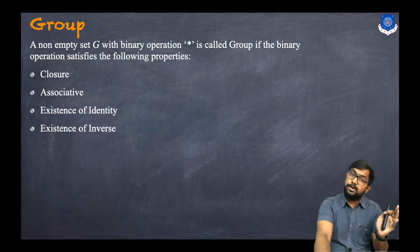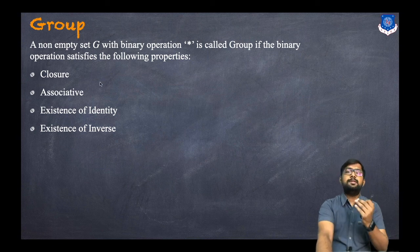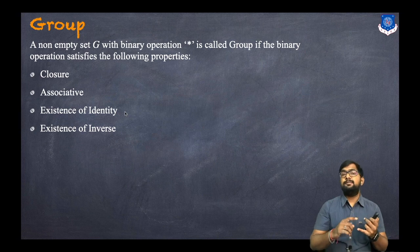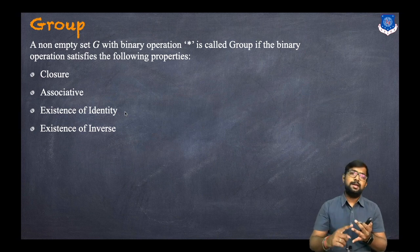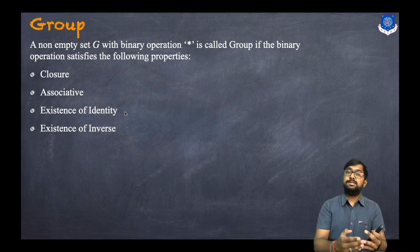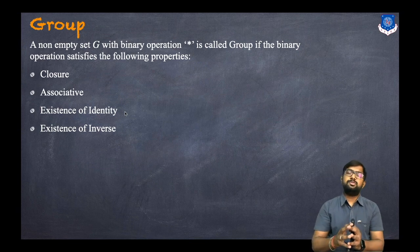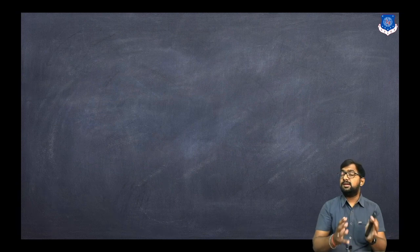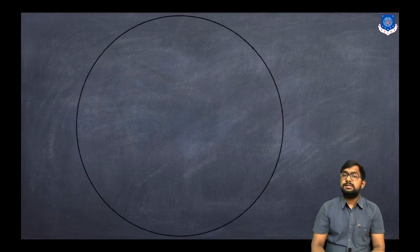The one remaining property is the commutative property, which gives us the abelian group. If a group also satisfies the commutative property, it is called an abelian group. So an abelian group has closure, associativity, identity, inverse, and commutativity.